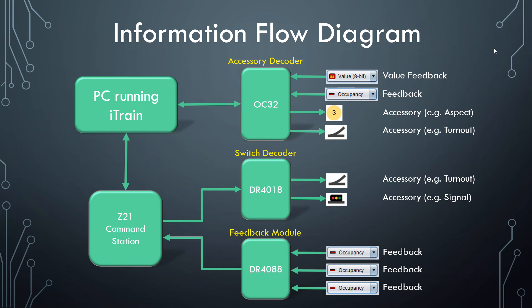In the previous video we looked at the value 8-bit feedback condition. The value 8-bit is used when we have a sensor or device that is able to generate 8-bit data — in other words, it can produce values from 0 to 255. And as with any feedback sensor, the information flow is always in the same direction: from the sensor and into iTrain. In this tutorial, we will look at another device that is capable of handling 8-bit numbers, called the aspect.